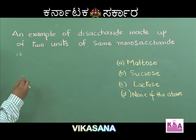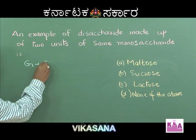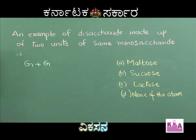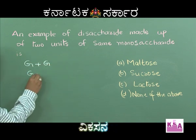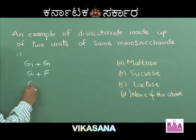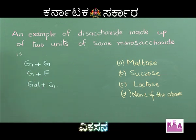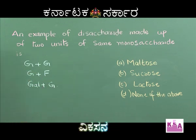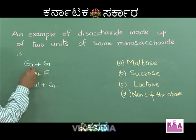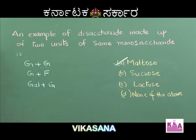The question asks for an example of a disaccharide made up of two units of the same monosaccharide. Maltose is made up of two glucose units; sucrose is a disaccharide of glucose and fructose; lactose is a disaccharide of galactose and glucose. Since maltose is made up of two glucose units, option A is the right answer.